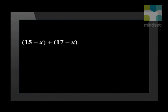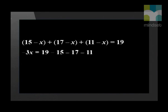We were also told that 19 liked exactly two of the fruits. This means that these areas must add up to 19. We can solve for X by setting up an equation: 15 minus X plus 17 minus X plus 11 minus X equals 19. We add the like terms and take the numbers to the right. Negative 3X equals negative 24, which means X equals 8.